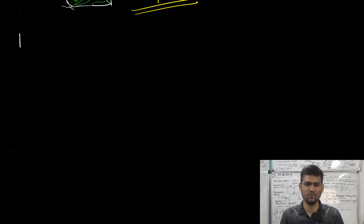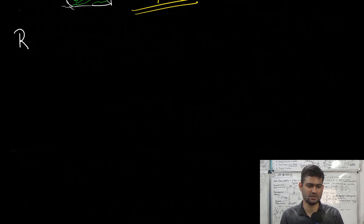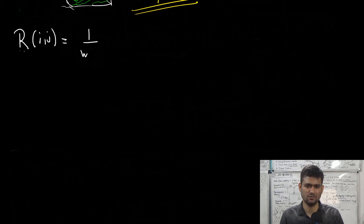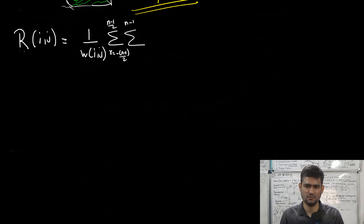This completes our discussion of the bilateral filter. We'll once again summarize the brute force implementation, which was also discussed in the previous lecture, just written here for completeness. If we apply the bilateral filter to pixel at location i comma j, the resulting pixel value would be 1 over W_ij times a sum over r equal to negative (N-1)/2 to (N-1)/2 and c equal to negative (N-1)/2 to (N-1)/2.